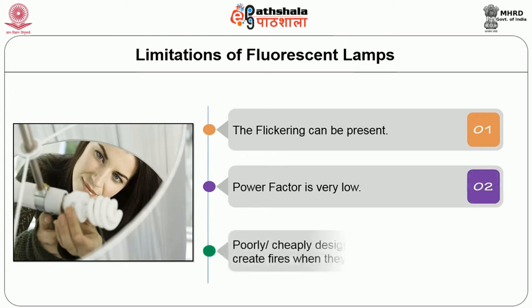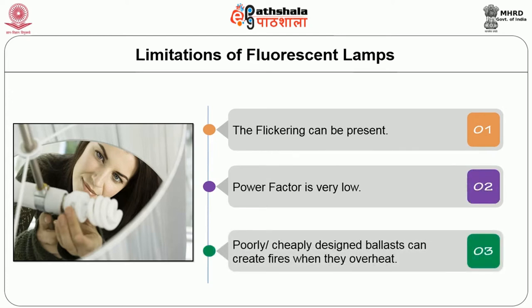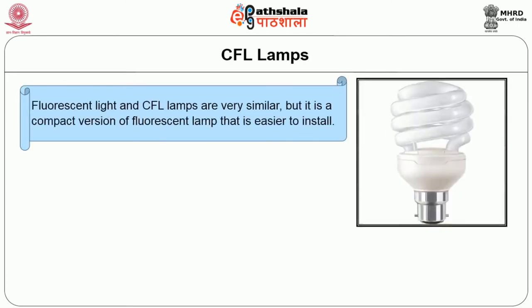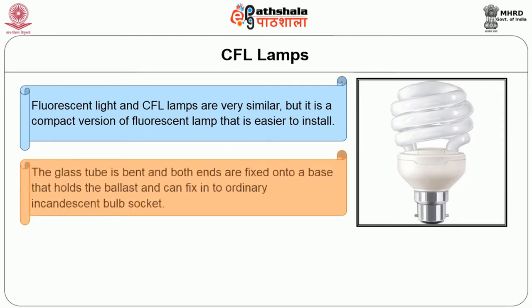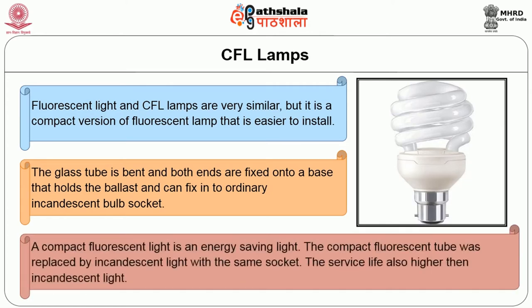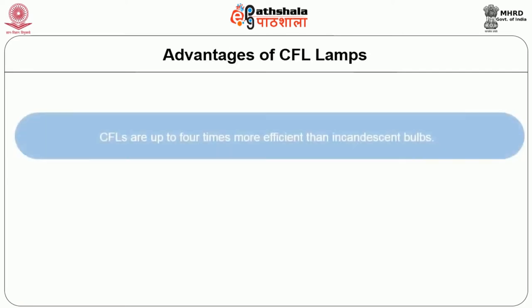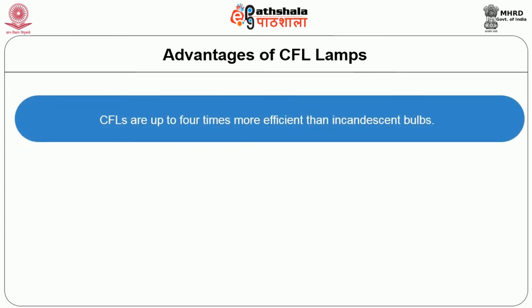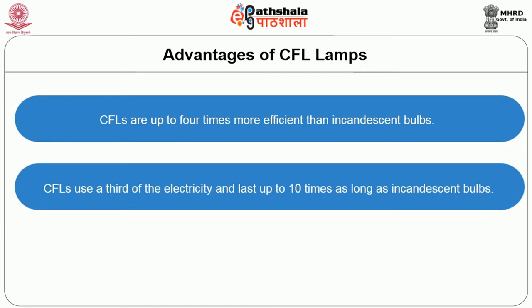CFL lamp: fluorescent light and CFL are very similar, but CFL is a compact version of the fluorescent lamp that is easier to install. The glass tube is bent and both ends are fixed onto a base that holds a ballast and can fit into an ordinary incandescent bulb socket. A compact fluorescent light is an energy-saving light. The compact fluorescent tube was designed to replace incandescent light with the same socket. The service life is also higher than incandescent light. Advantages of CFL lamps: CFL are up to 4 times more efficient than incandescent bulbs. CFL use one-third of the electricity and last up to 10 times as long as the incandescent bulb. Just one bulb can reduce half a ton of carbon dioxide from the atmosphere over the life of the bulb.